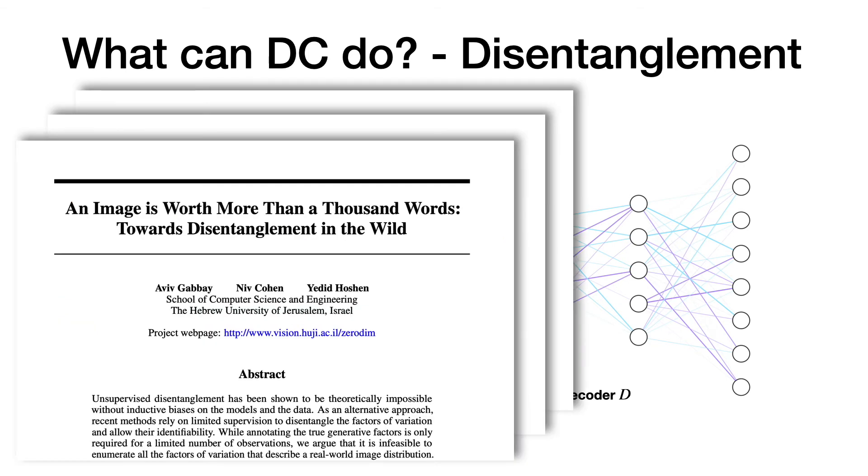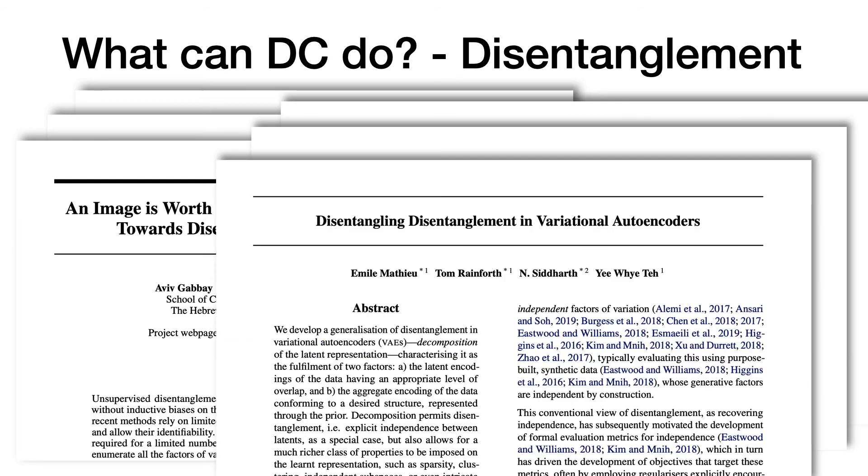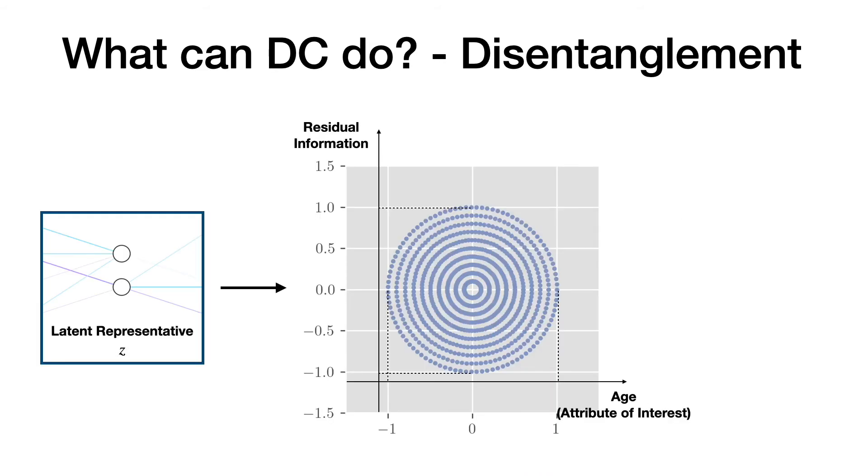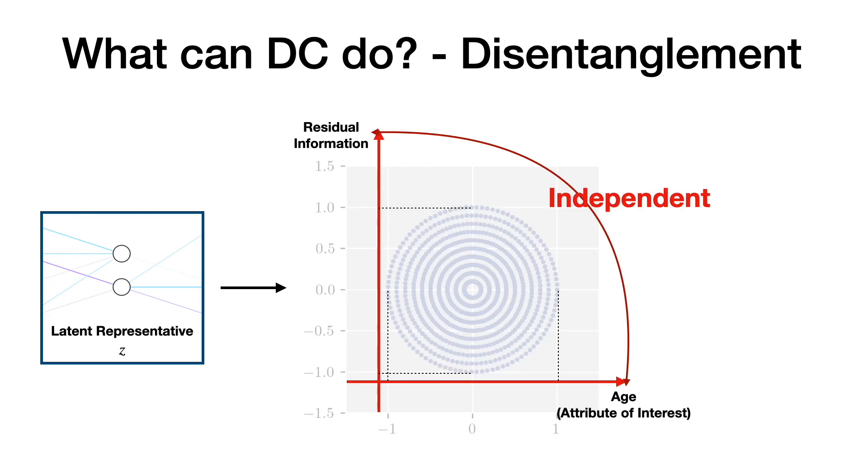This recent paper is entirely focused on this specific question, and there are others. The key point of disentanglement is the independence between variables. You will see immediately that we can use distance correlation to measure the independency. In other words, if we do so, we can make sure that the latent representations are disentangled.